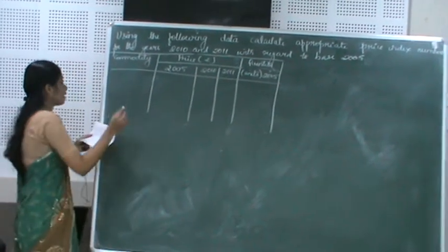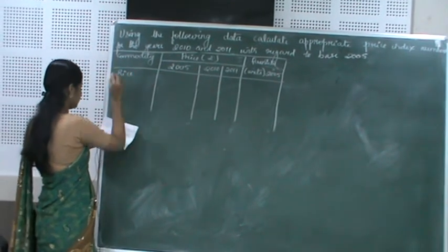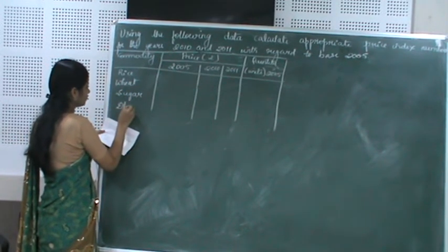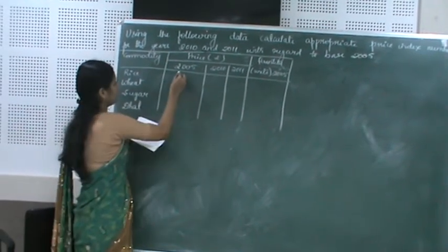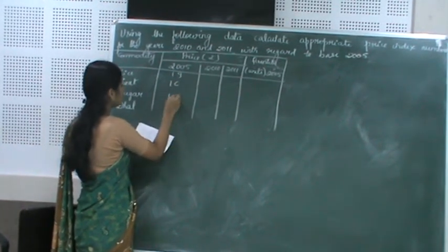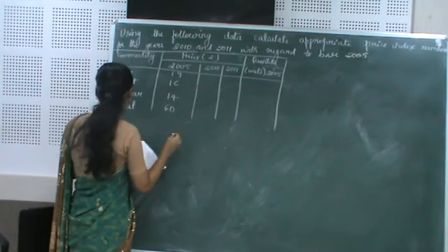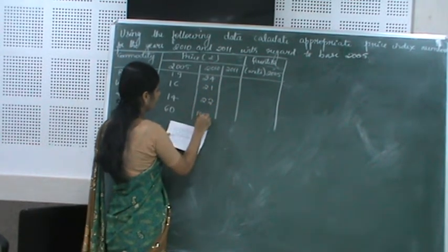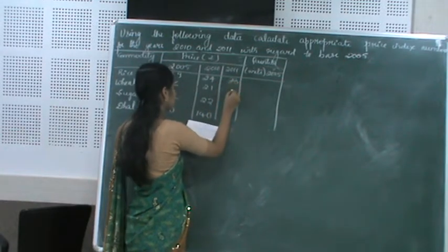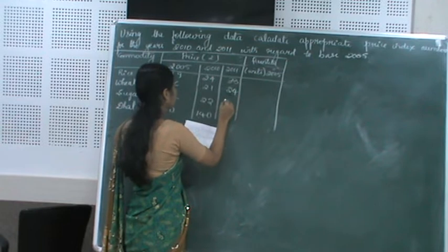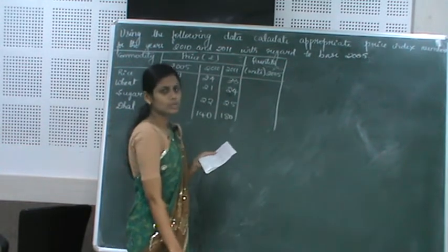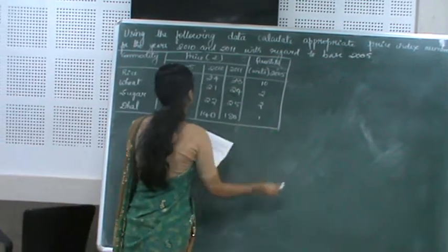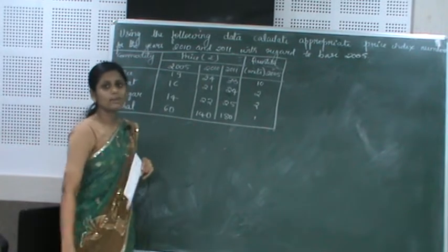The commodities are rice, wheat, sugar, and dal. Prices in 2005 are 19, 16, 14, and 60. Prices in 2010 are 20, 21, 22, and 140. Prices in 2011 are 33, 24, 25, and 180. Quantities in 2005 are 10, 2, 2, and 1. This is the information given, and you are asked to calculate the appropriate price index number.